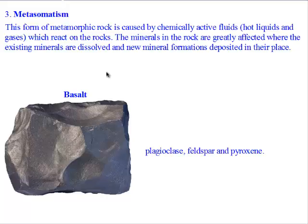For instance, a rock like basalt — its original mineral composition is the plagioclase, the feldspar, and the pyroxene. Now, when this basalt comes into contact with chemically active fluids, for instance hydrothermal fluids — that is, hot water — it may change the mineral composition of the basalt.